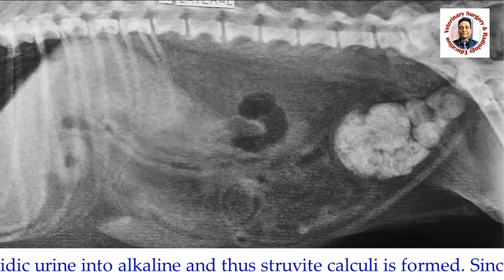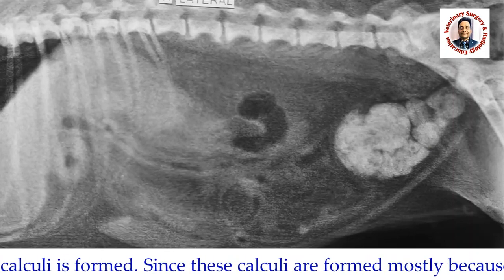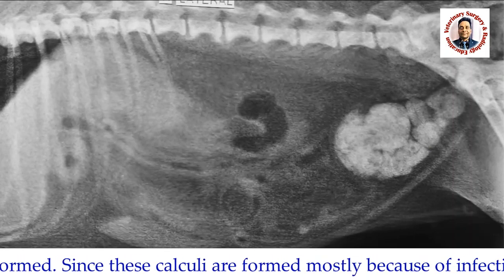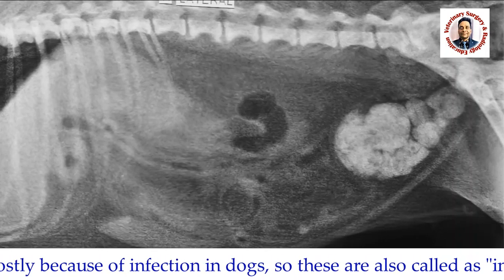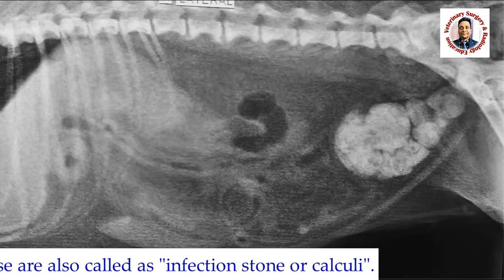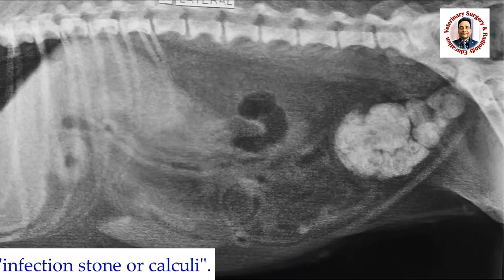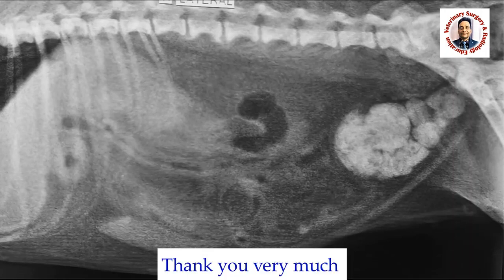This is the reason that in canine urolithiasis, struvite calculi are basically secondary to urinary tract infection. This is why these calculi are also called infection calculi, because in dogs they are mostly caused by urinary tract infection. If you want to see how a cystotomy is performed, I have given the link in the description box — go and click on the link and watch the cystotomy procedure. Thank you very much.